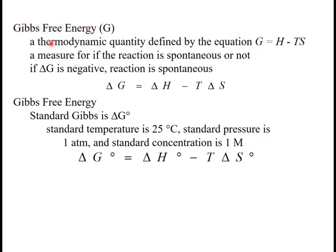It's a thermodynamic equation defined like this. We're going to talk about whether this is a true prediction of something that's spontaneous or non-spontaneous. If delta G is negative, the reaction is spontaneous. Conversely, if delta G is positive, the reaction is non-spontaneous.